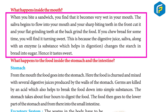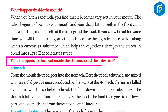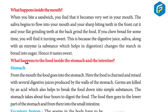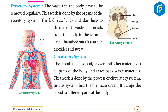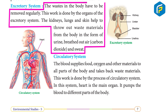What happens inside the stomach? From the mouth, food goes into the stomach, where it is churned and mixed with several digestive juices produced by the stomach walls. Germs are killed by an acid that also helps break food down into simple substances. The stomach takes about four hours to digest food, which then passes into the small intestine.